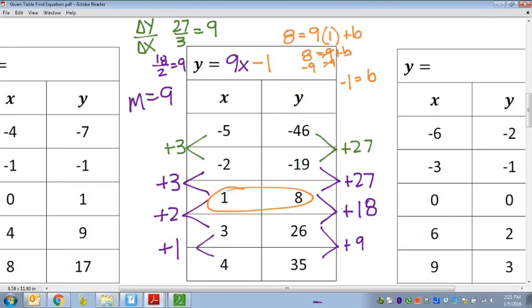So given the table, we find the change of y over the change of x. And then, again, reduce the fraction and make sure it's the same between all the different points. So that's how you find the equation of a line. Thank you.